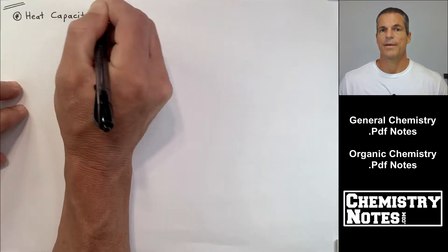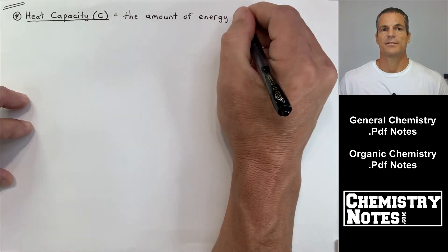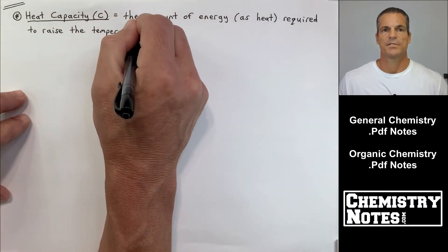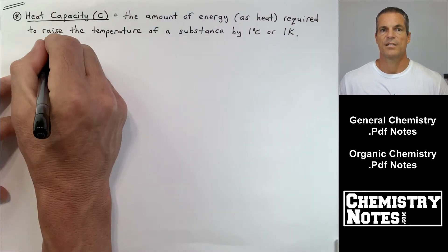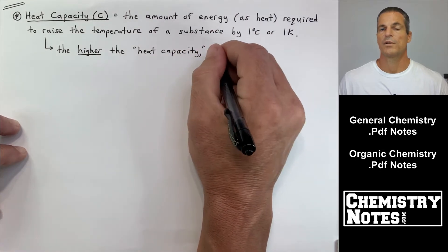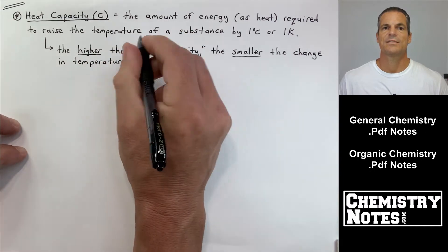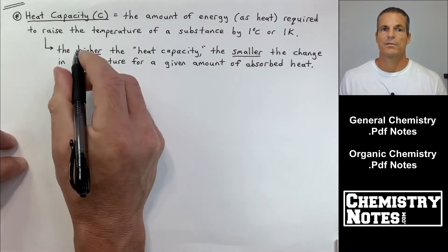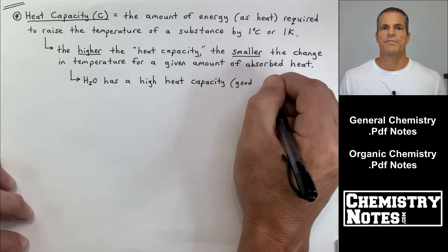So let's talk about heat capacity. Heat capacity, capital C, is the amount of energy as heat required to raise the temperature of a substance by one degree Celsius or one degree Kelvin. It does not specify the amount of substance — that's for specific heat capacity. The higher the heat capacity, the smaller the change in temperature for a given amount of absorbed heat. Water has a high heat capacity; metals have low heat capacities.